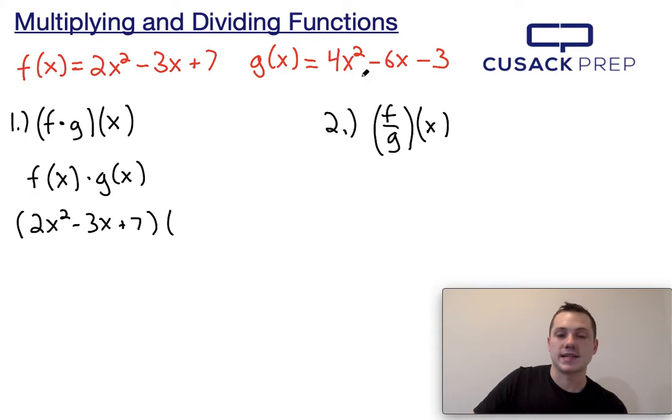And g of x is 4x squared minus 6x minus 3, so I'm going to replace g of x with that whole value as well. Minus 3.